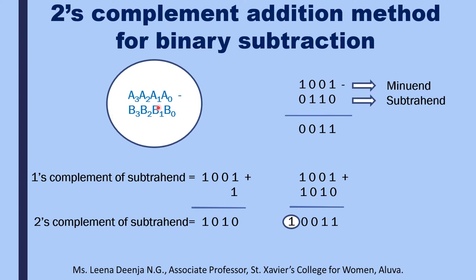Suppose A3 A2 A1 A0 is 1001 and B3 B2 B1 B0 is 0110. Then 1001 minus 0110: 1 minus 0 is 1. Then subtracting 1 from the next digit requires borrowing, so 0 minus 1 gives 1 with a borrow. After subtracting, 1 minus 1 is 0, and 0 minus 0 is 0. So our answer is 0011.